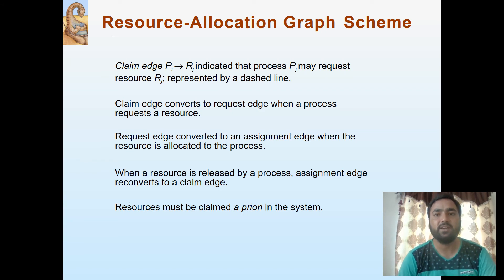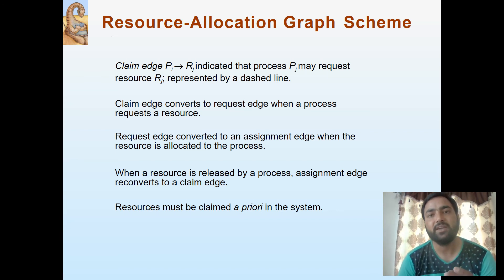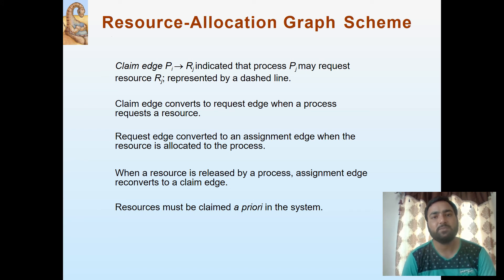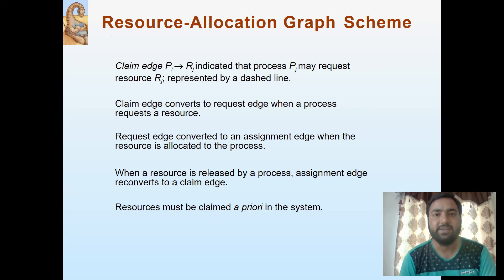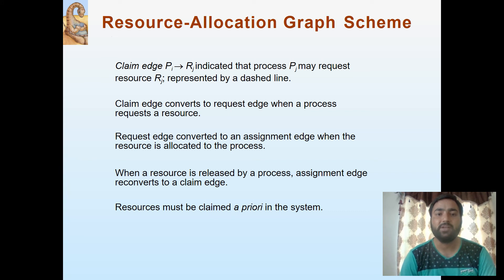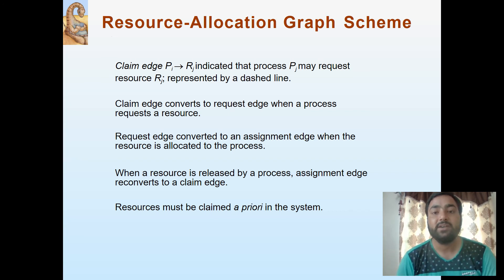In resource allocation graph, there are three edges: a claim edge, a request edge, and an allocation edge. A claim edge denotes that the process may request a resource, and it is represented by a dashed line. A particular process P can request for a particular resource R, represented through dashed lines. There is a possibility that the process will request for that resource, and if it makes the request, the claim edge will be converted into the request edge.